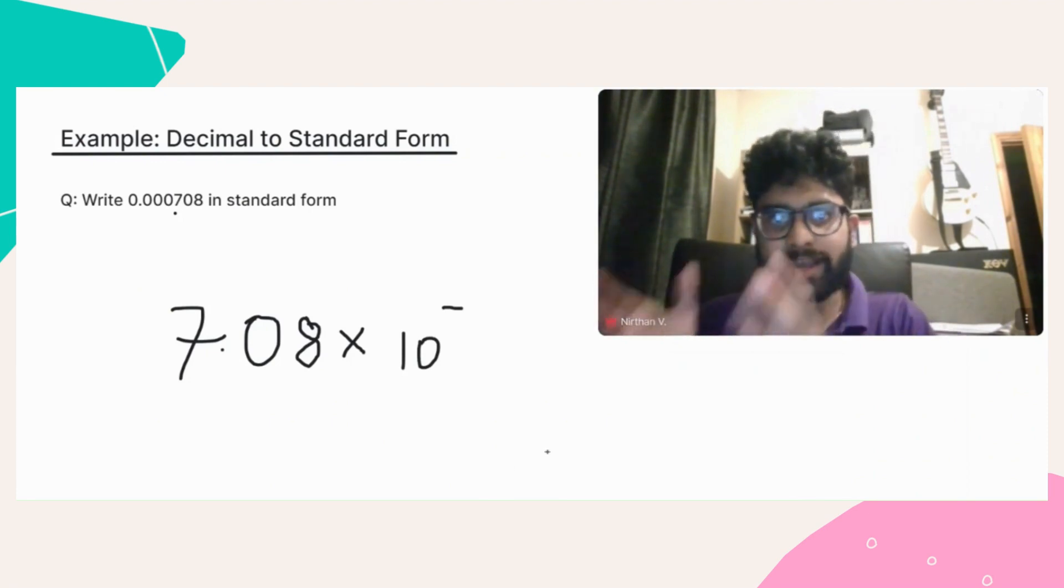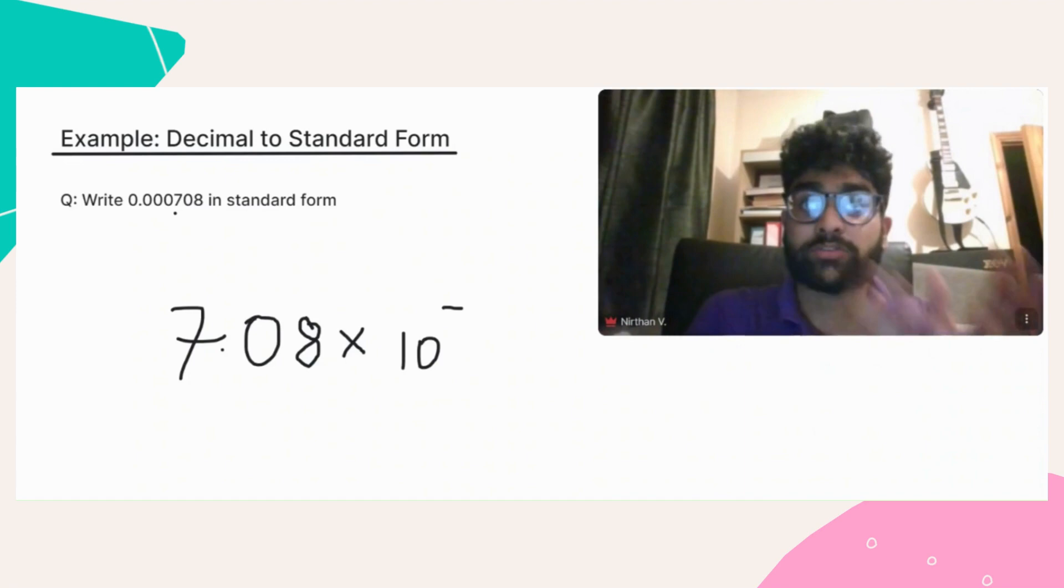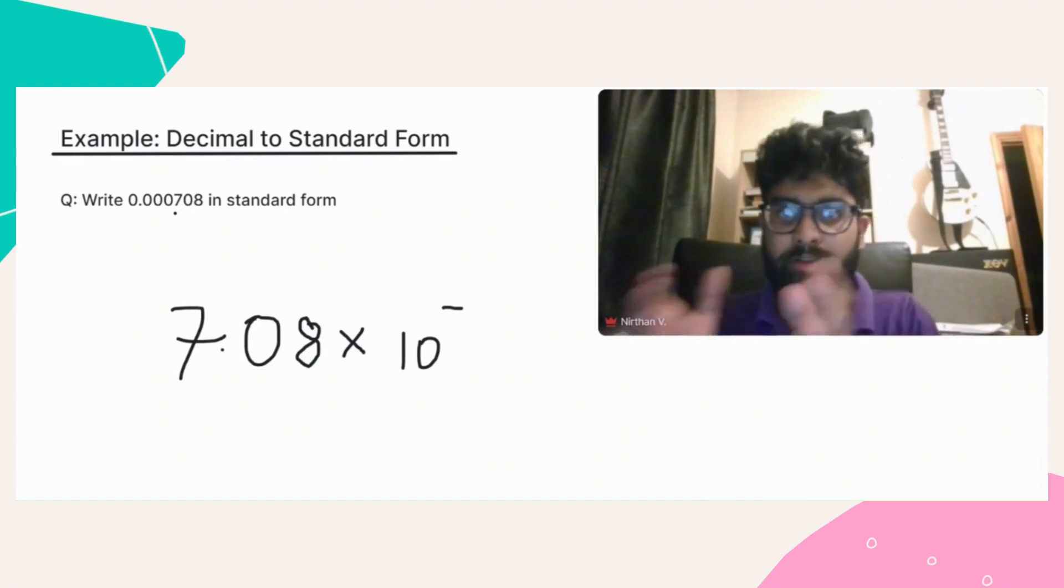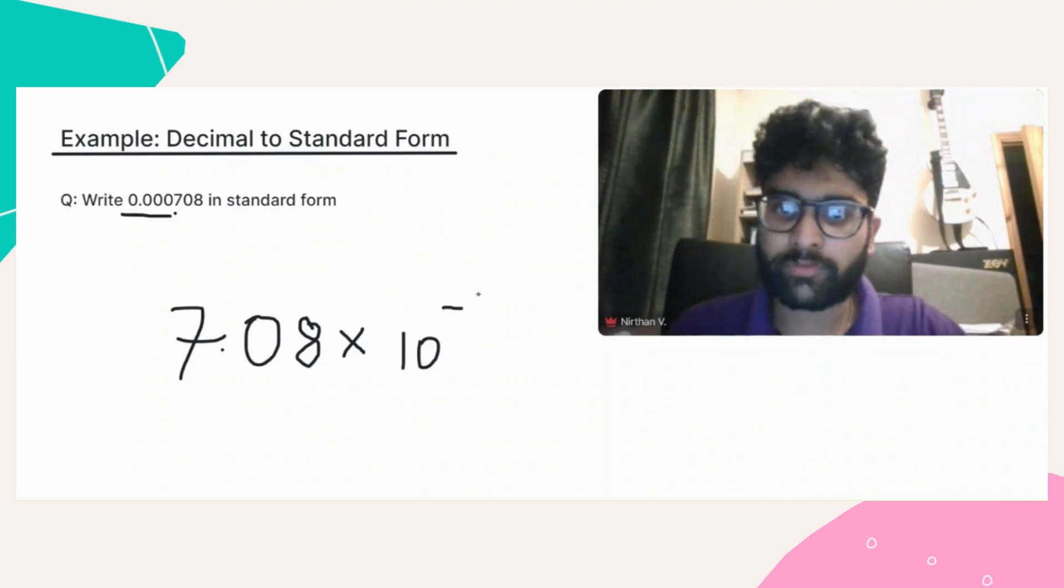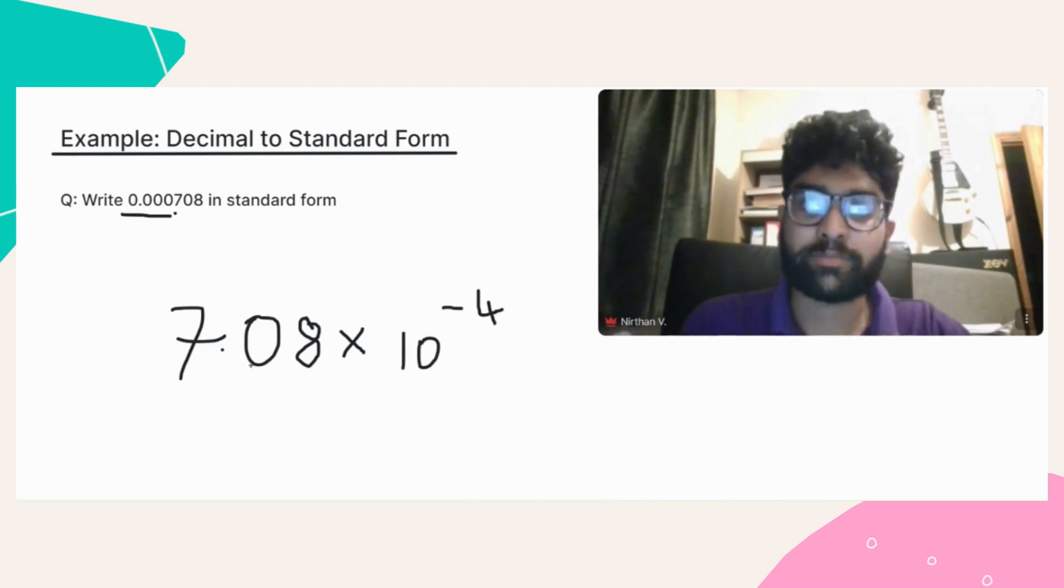Then what we want to do is count the number of zeros before the first non-zero digit. So in this case, the number of zeros before the 7. And when we do that, we get four zeros. So we write the number 4 next to the minus. And that gives us our final answer of 7.08 times 10 to the power of minus 4.